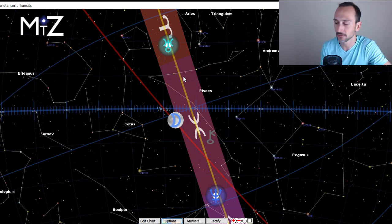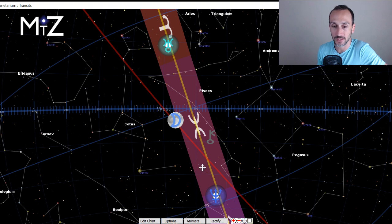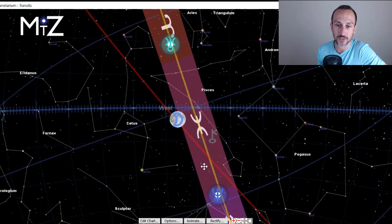Alright, so here is the sky for this Tuesday. And again, we are using the actual size of the constellations, which is different from mainstream astrology.